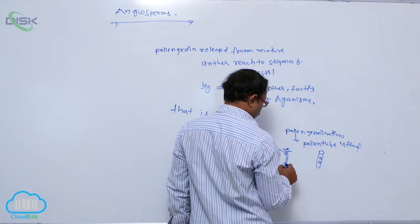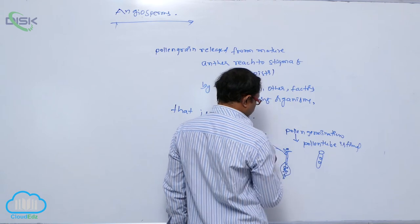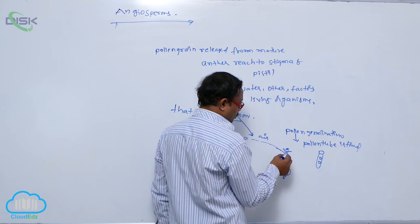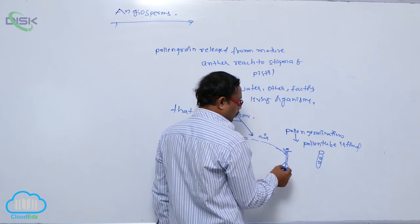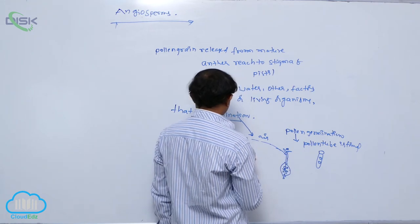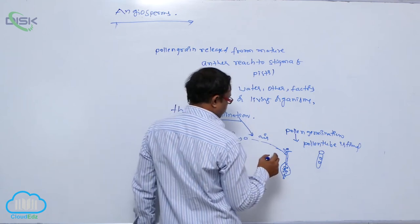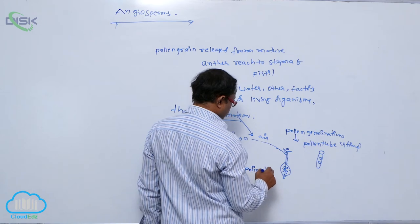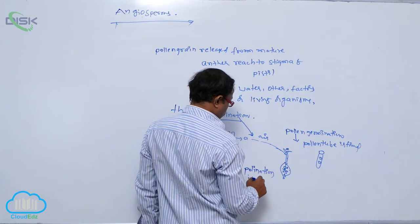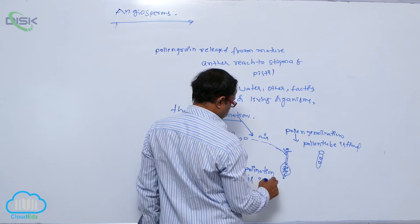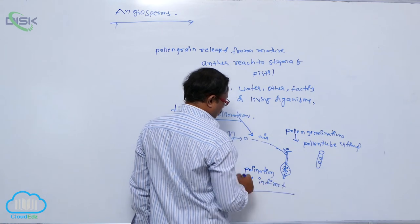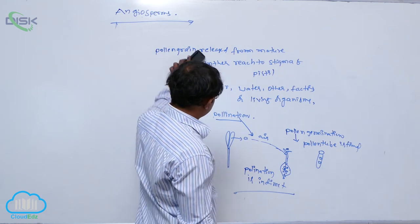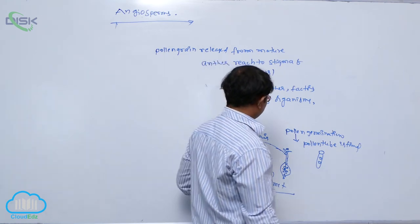The pollen tube reaches from the style to the ovary and then to the ovule. Since the pollen grains fall on the stigma and then travel through the style to reach the ovary and ovule, this is known as indirect pollination.